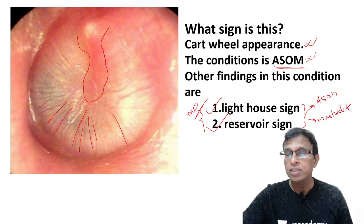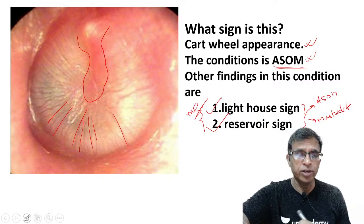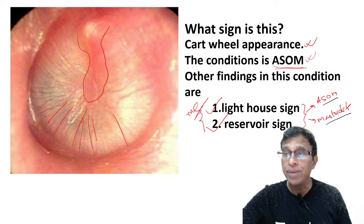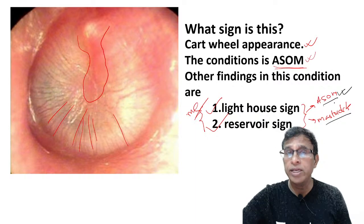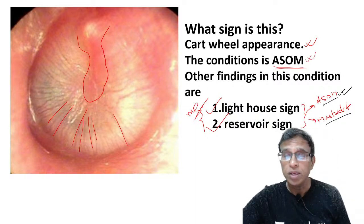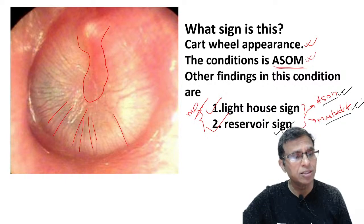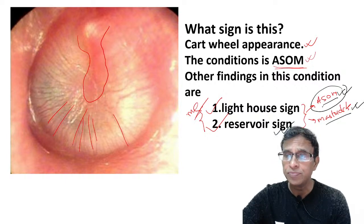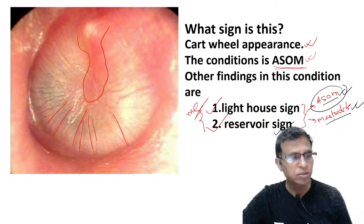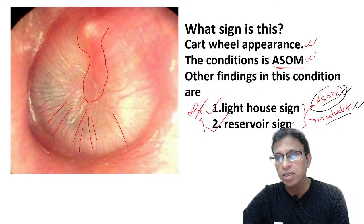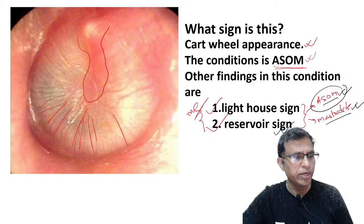An important distinction: if they ask which condition shows the lighthouse sign, both ASOM and mastoiditis are correct, but ASOM is the better answer. Conversely, for the reservoir sign, if both are given as options, mastoiditis is the better answer. These are little nuggets — for lighthouse sign, pick ASOM; for reservoir sign, pick mastoiditis.